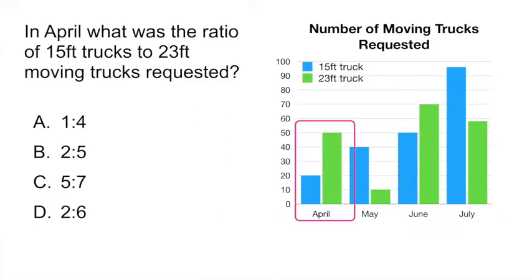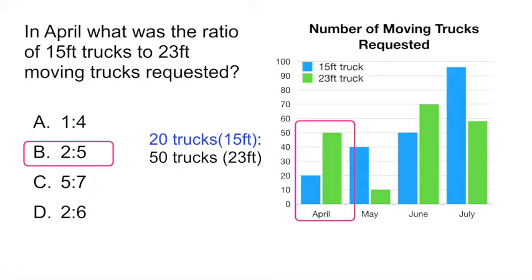If we go back to the question, the question said, in April, what was the ratio of 15 feet trucks to 23 feet moving trucks requested? If you look at these two bars, you can see that the bar for 15 feet trucks goes up to 20 and the bar for 23 feet trucks goes up to 50. So the ratio would be 20 trucks to 50 trucks and if you reduce that, you simplify it, it would be 2 to 5. So answer B.